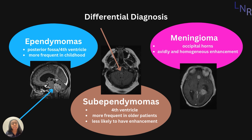Subependymomas are usually found in the fourth ventricle. They're more frequent in older patients, and they are less likely to have enhancements. Here we see in this orange-brown color, with the arrow pointing at the subependymoma in the fourth ventricle.